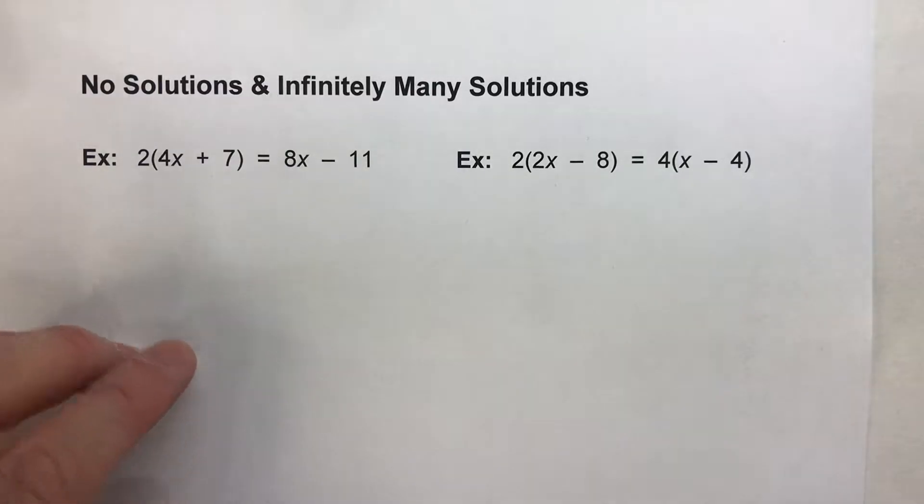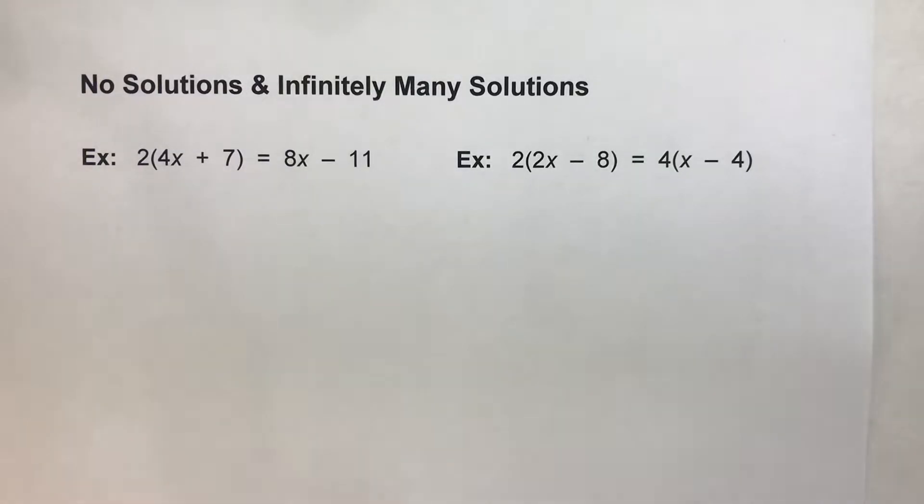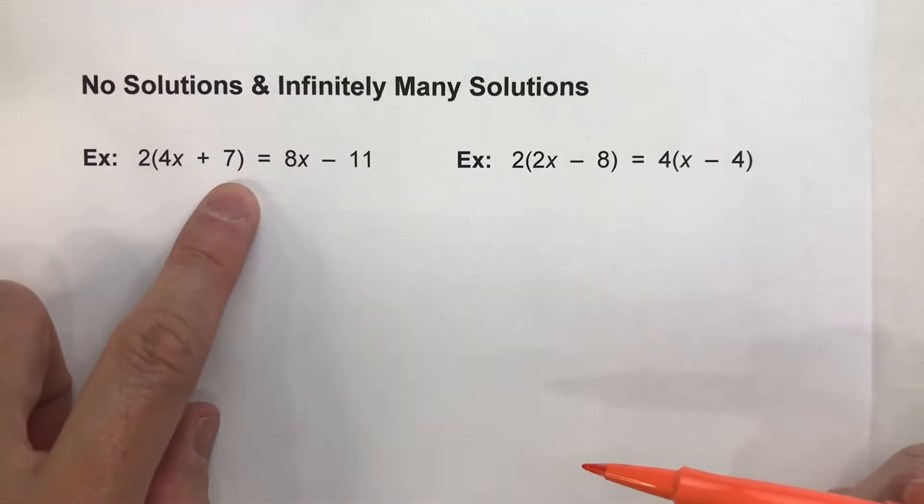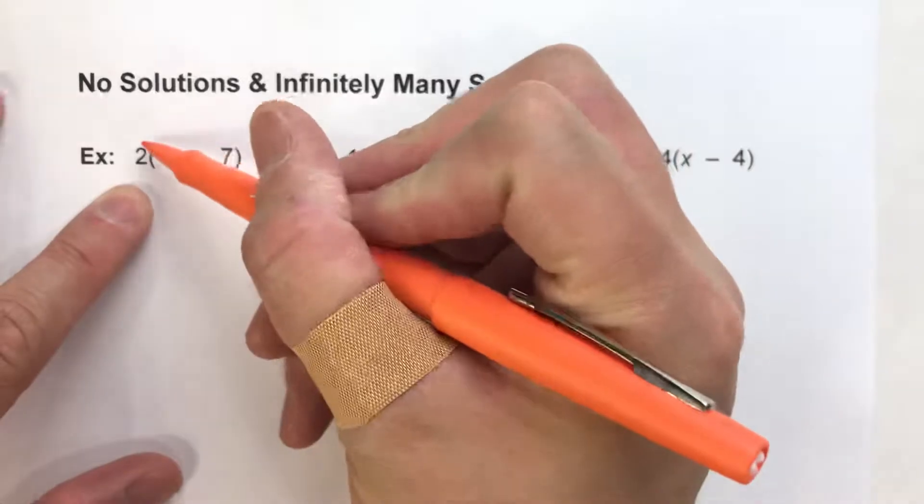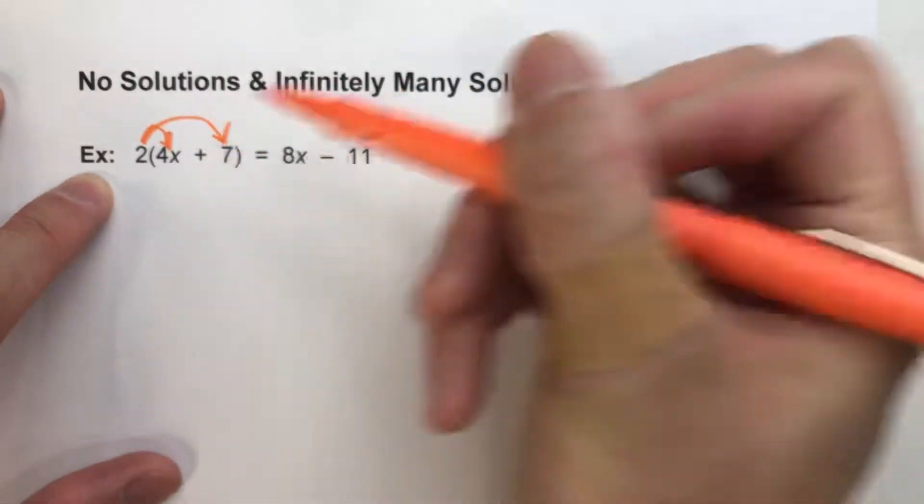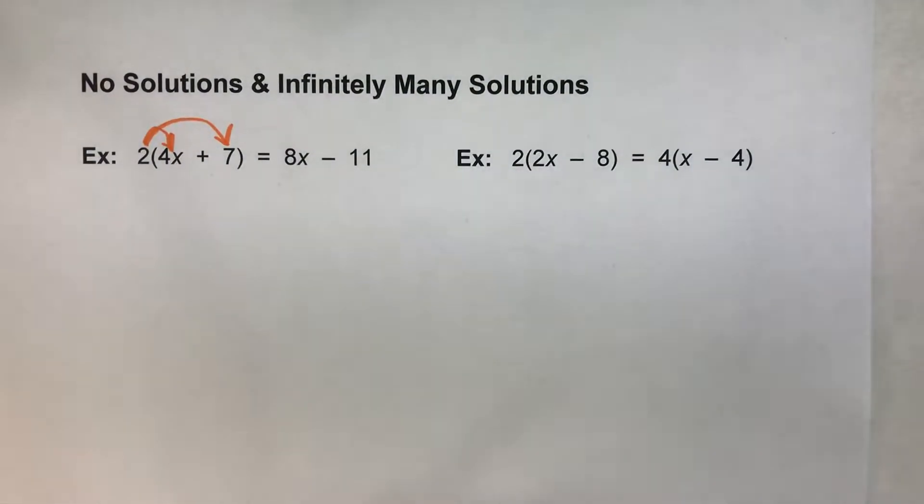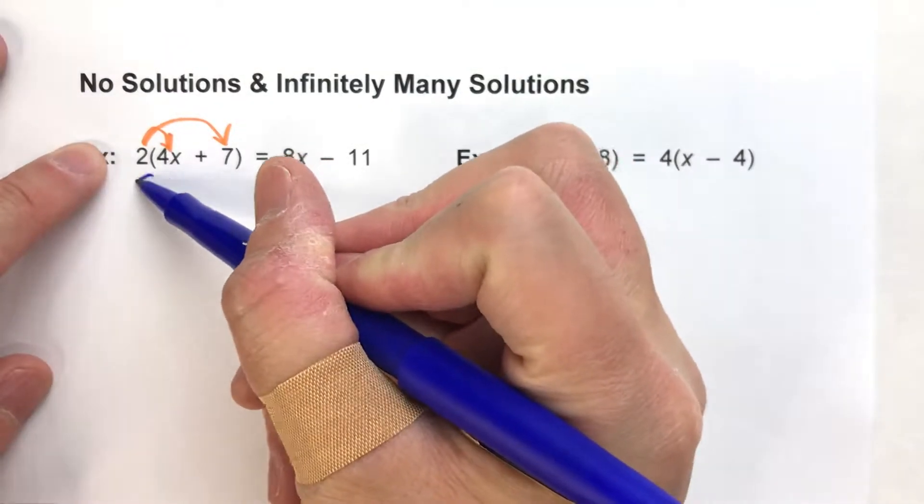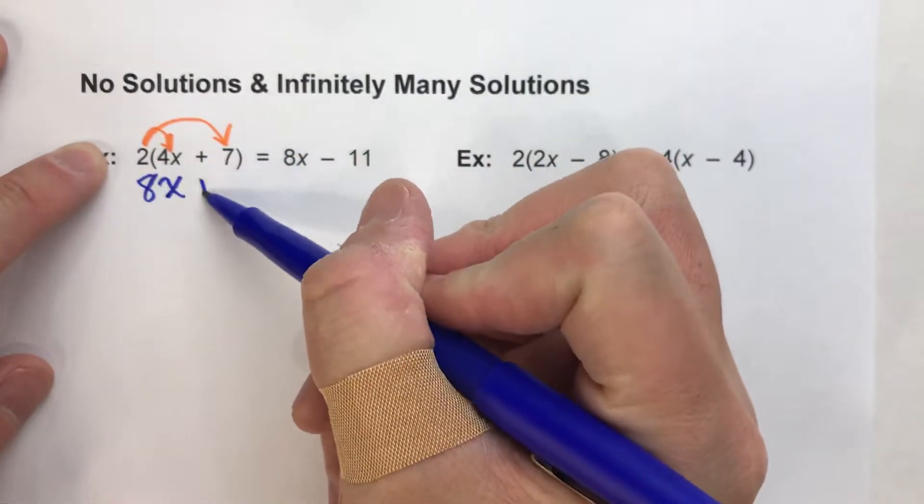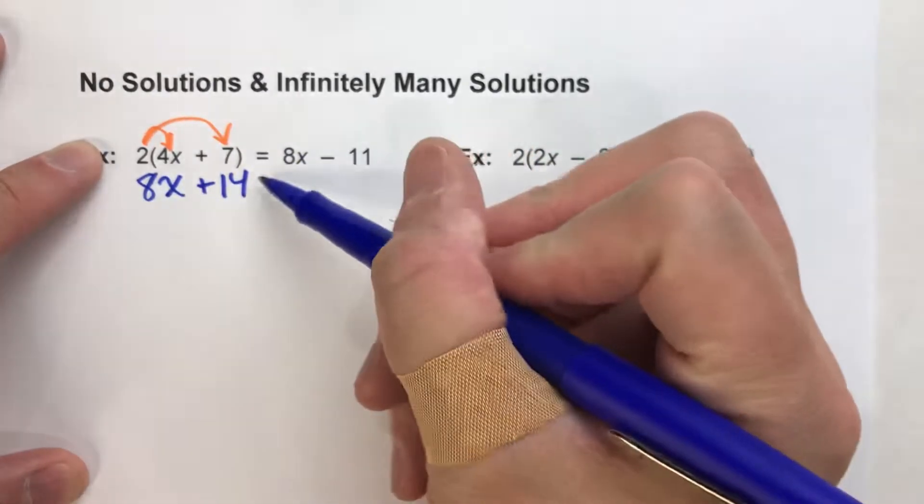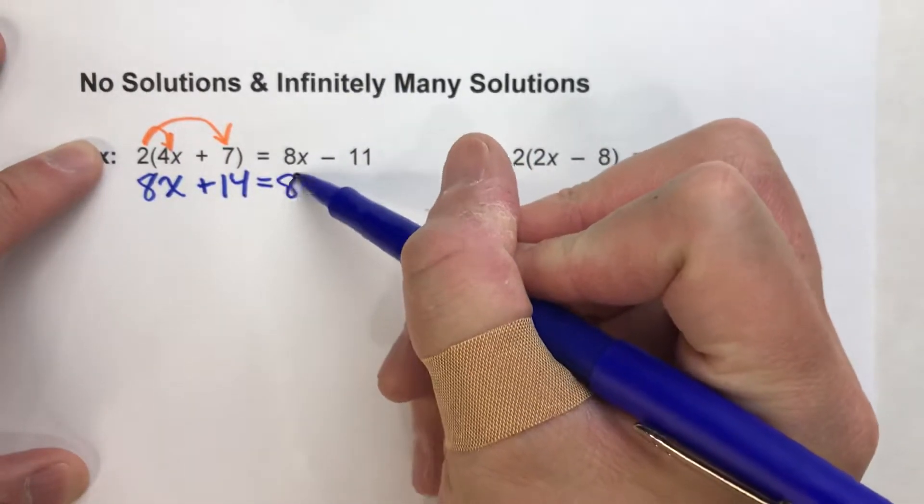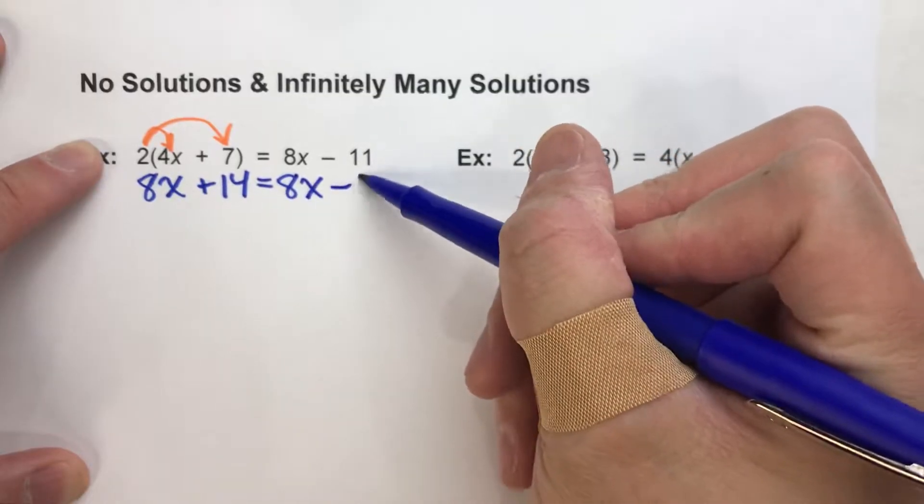So let's take a look at this first example. We've got 2 times 4x plus 7 in parentheses equals 8x minus 11. We've got parentheses, so my first step is the distributive property. So 2 times 4x is 8x plus 2 times 7 is 14. And I'll drop down my equals, drop down my 8x, and drop down my minus 11 on the other side.